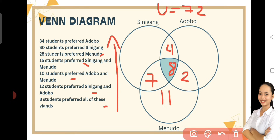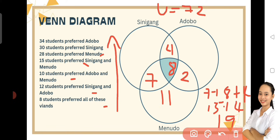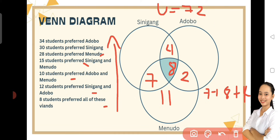Ngayon, proceed na tayo kay Sinigang. Ganun din, katulad sa ginawa natin sa Menudo, ipag-a-add natin lahat ng number na pasok sa bilog ni Sinigang, which is yung 7 plus 8 plus 4 is equals to 19. So, 34 minus 19 naman is equals to 15. So, 15 yung students na may gusto sa Sinigang.